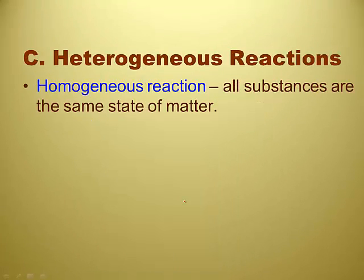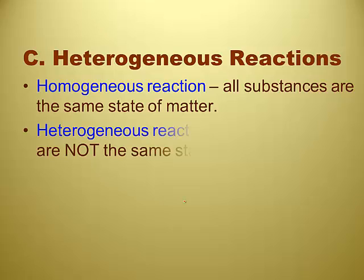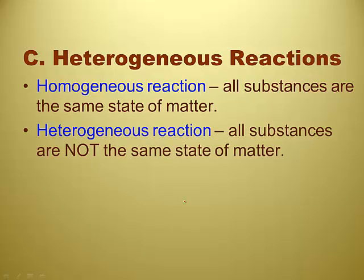Heterogeneous reactions. So there are two kinds of reactions and you're going to see both these terms. A homogeneous reaction is one where all the substances are the same — because homo means the same. A heterogeneous reaction is where all the substances are not the same. What we mean by the same here is states of matter. You've got all aqueous — homogeneous. You've got two substances aqueous and two gases — heterogeneous. Any combination of states of matter makes it heterogeneous.